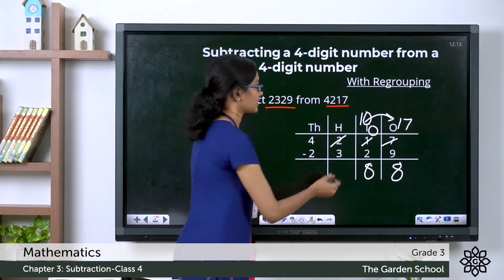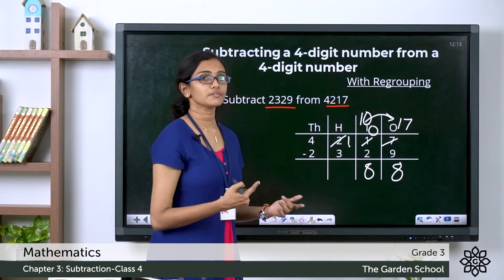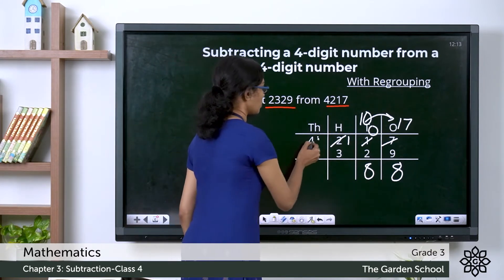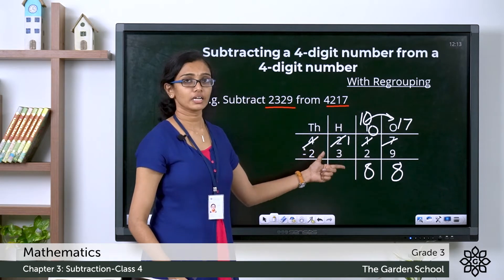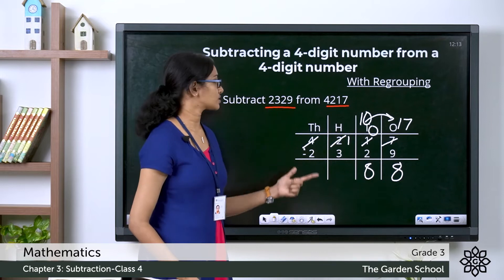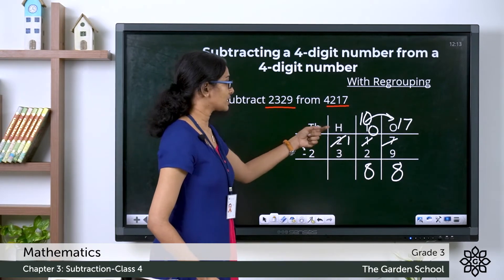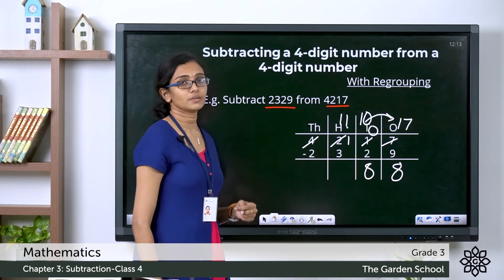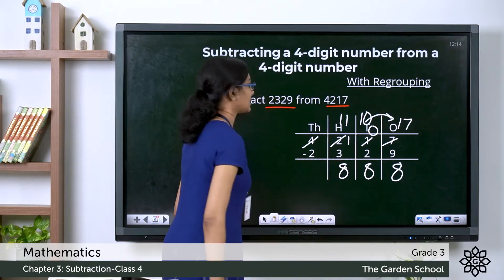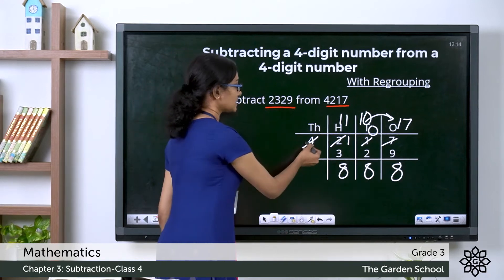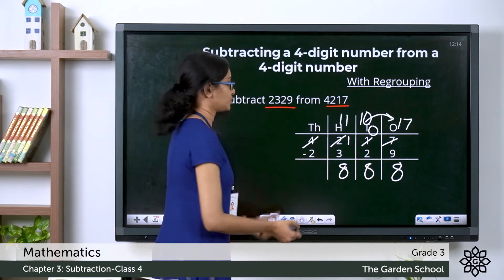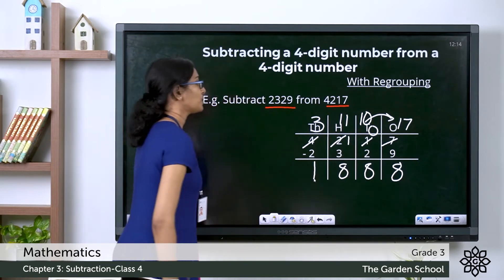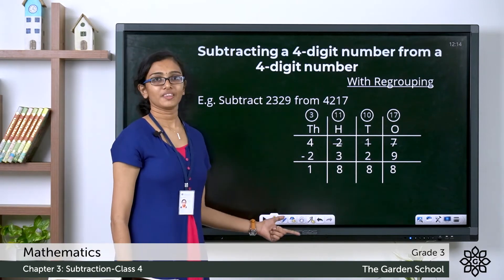Since we gave 100 to the tens place, the hundreds digit is reduced from 200 to 100. So here we have 1 hundred minus 3 hundreds — we cannot do that. So again we borrow 1000 from the thousands place and give it to the hundreds place. 1000 is equal to 10 hundreds, so it becomes 10 hundreds plus this 1 hundred, which equals 11 hundreds. Now 11 hundreds minus 3 hundreds is 8. Since we gave 1000 to the hundreds place, the thousands digit is reduced from 4 to 3. So in the thousands place we have 3 minus 2 which equals 1. The difference is 1888.